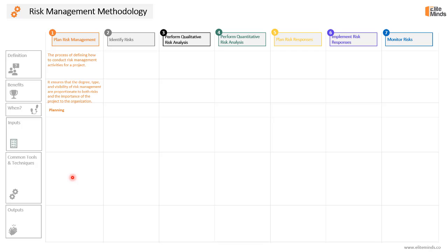This process is conducted as part of the planning phase throughout the project. In order to start planning for risk management, you need to have the approved project charter and all the components of the project management plan. You will use some project documents, mainly the stakeholder register, to know who are the stakeholders you will be interviewing in order to plan for risk management. We will also need the enterprise environmental factors and the organizational process assets.